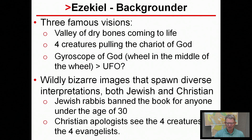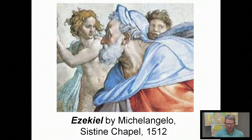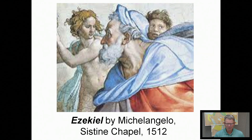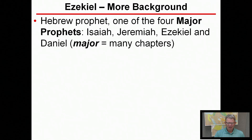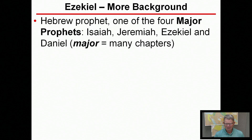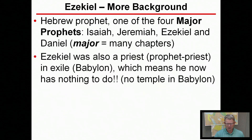Here's a picture of Ezekiel as seen by Michelangelo in the Sistine Chapel around 1500 — he seems old in this picture, but he was a bit younger than Jeremiah. Ezekiel is a Hebrew prophet, one of the four major prophets: Isaiah, Jeremiah, Ezekiel, and Daniel. They're called major because they are long — 45 to 60 chapters — as opposed to the 12 minor prophets, whose books are only three or four short chapters.